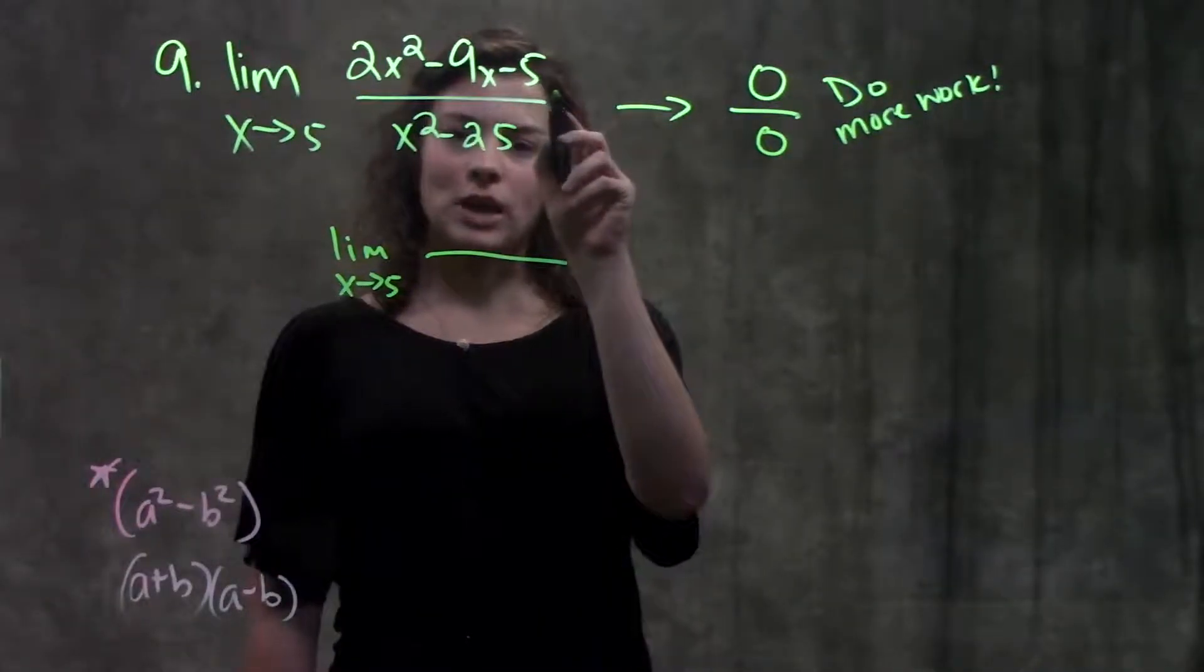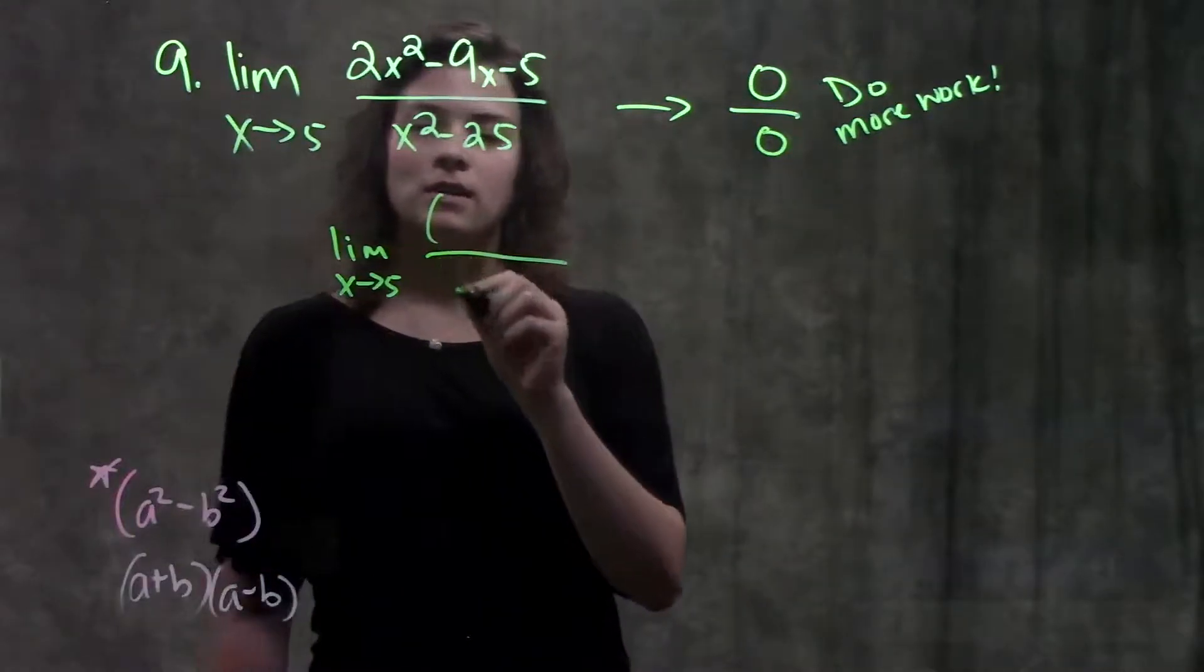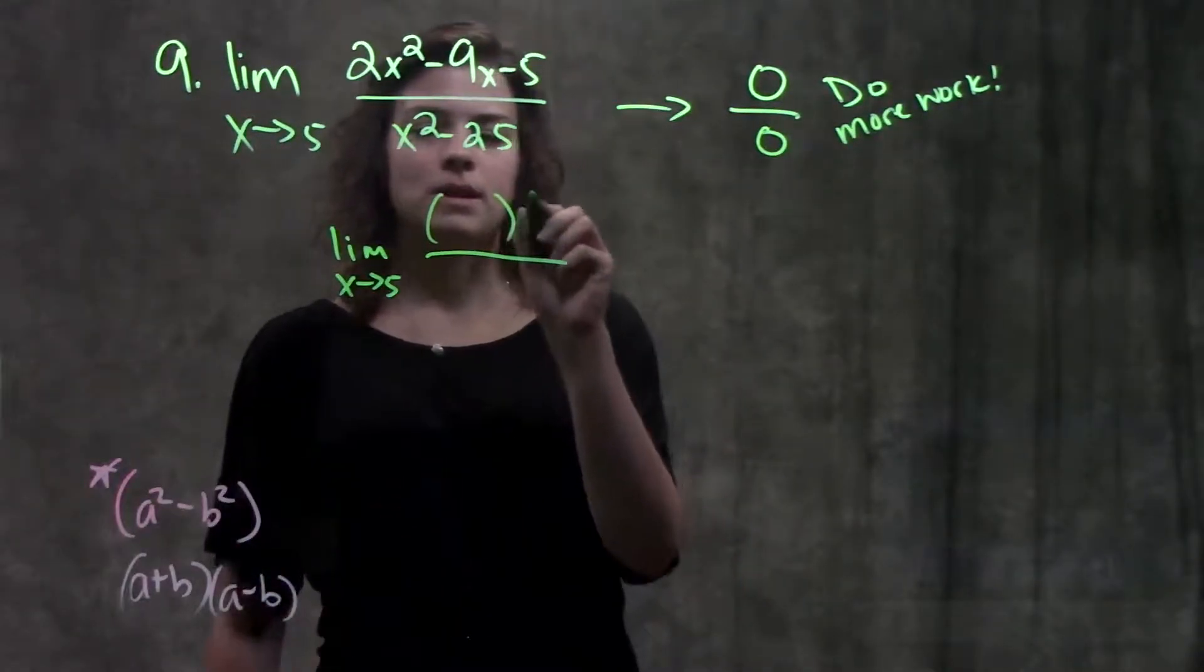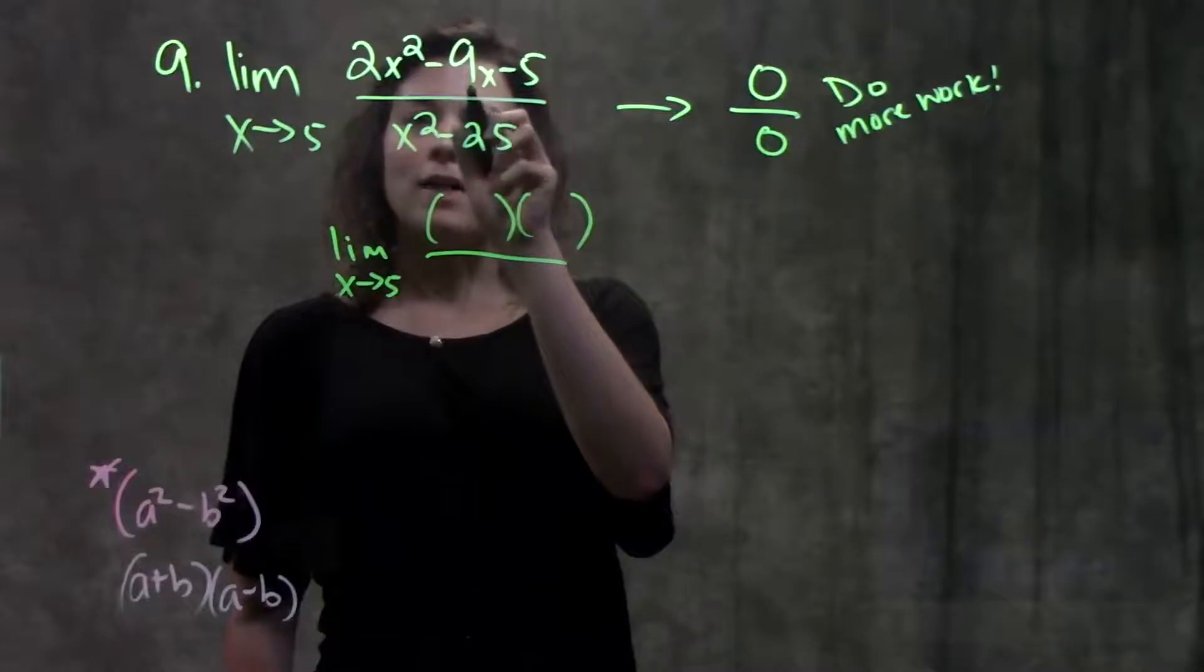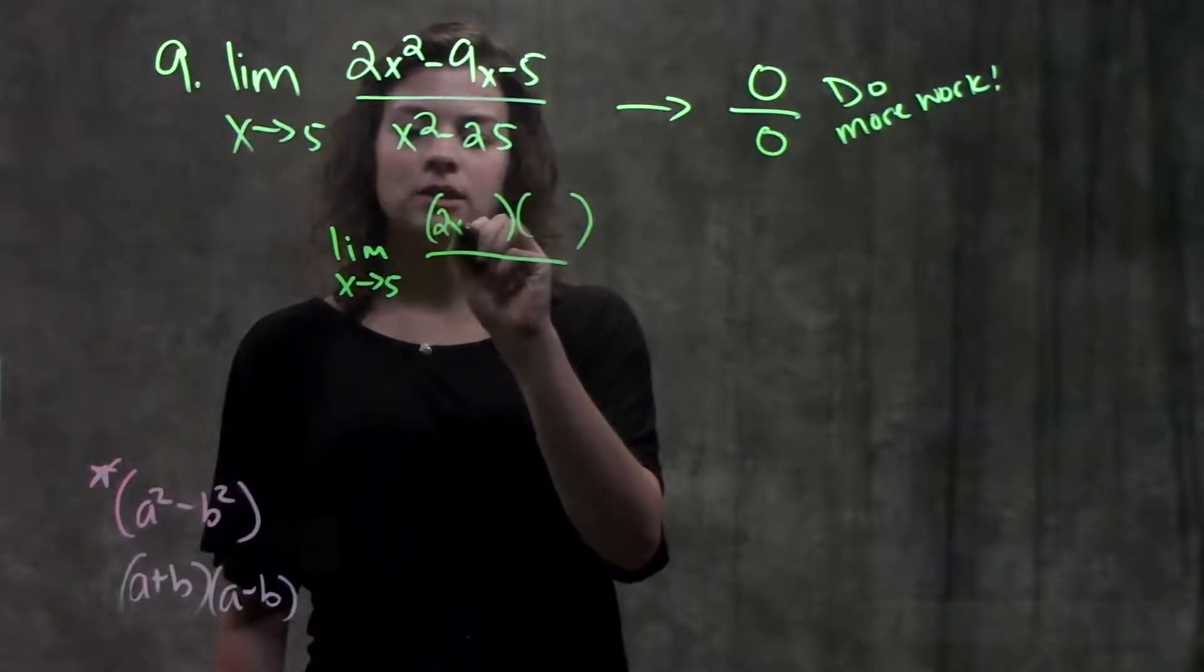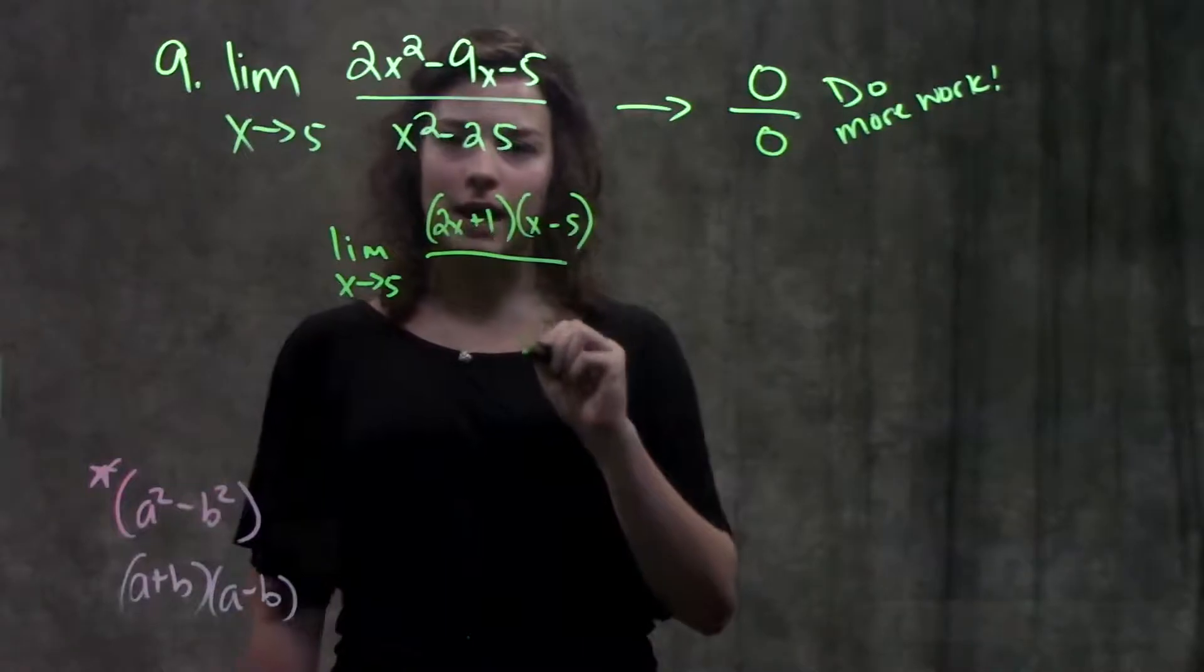Alright, our top here is a quadratic. The way we factor quadratics is we just factor them down into two binomials being multiplied by each other. This factors down into (2x + 1) and (x - 5).